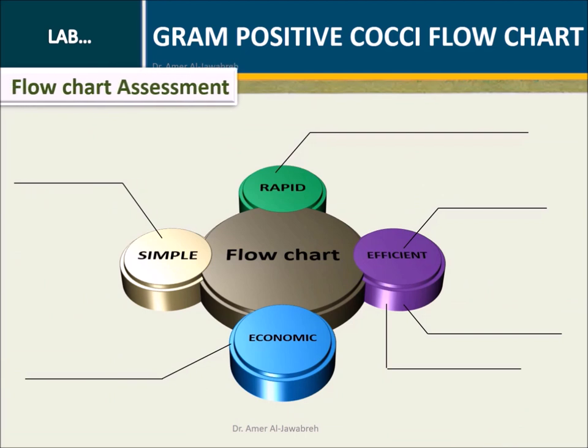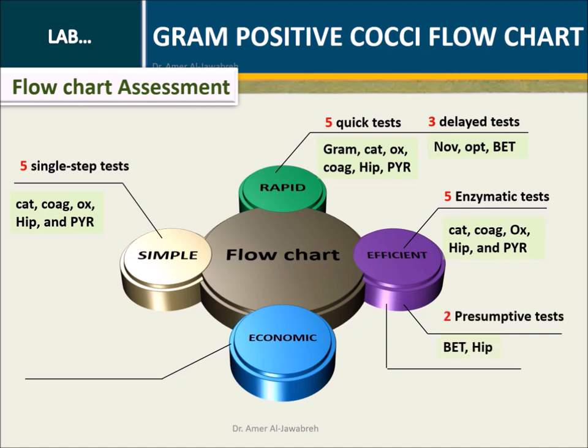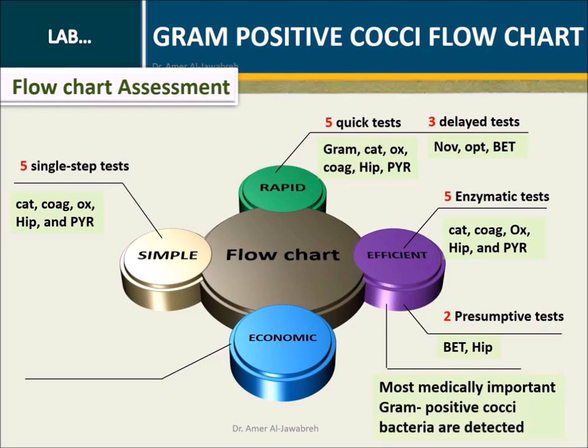Flowchart assessment. Simple: five single-step tests. Rapid: five quick tests, but three delayed tests. Efficient: five enzymatic tests, only two presumptive tests, and most medically important gram-positive cocci bacteria are detected. Economic: five single-reagent tests.